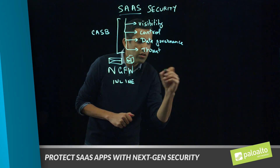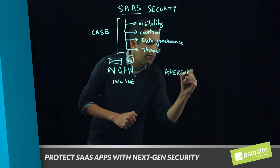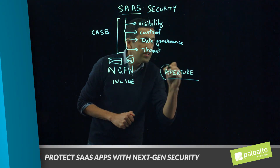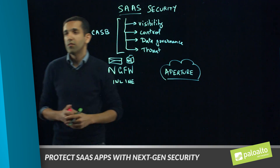The second piece is Aperture. Aperture is a cloud service by itself, so it is a SaaS security service. It's able to look through sharing permissions of files stored within these SaaS applications, look through threats that are actually stored within these SaaS applications, and also look for sensitive data that might be stored within documents in these SaaS applications.